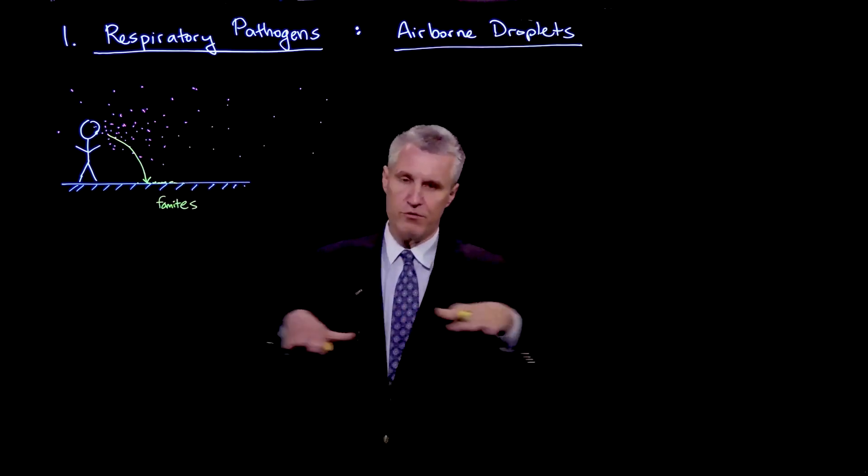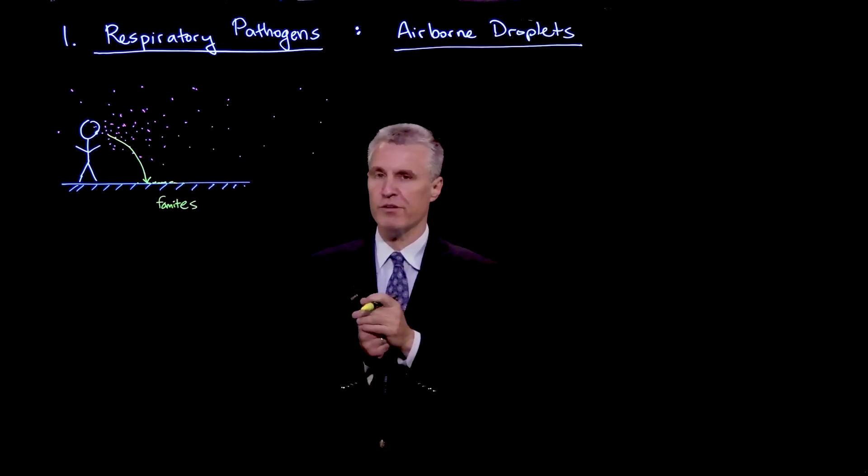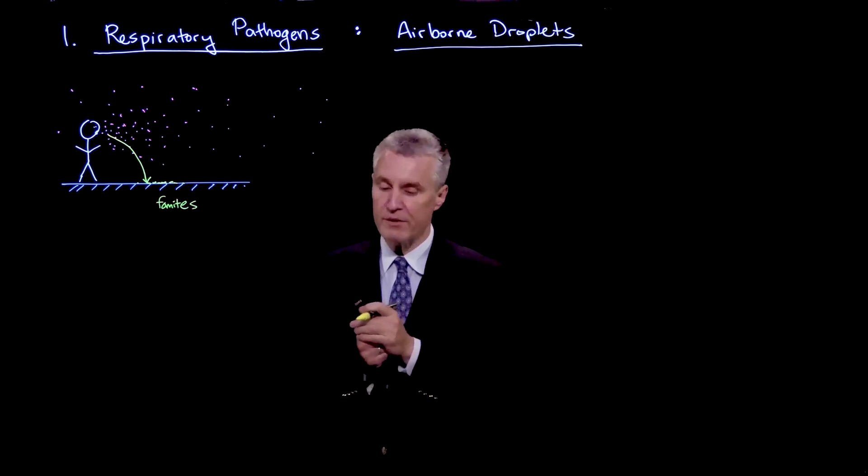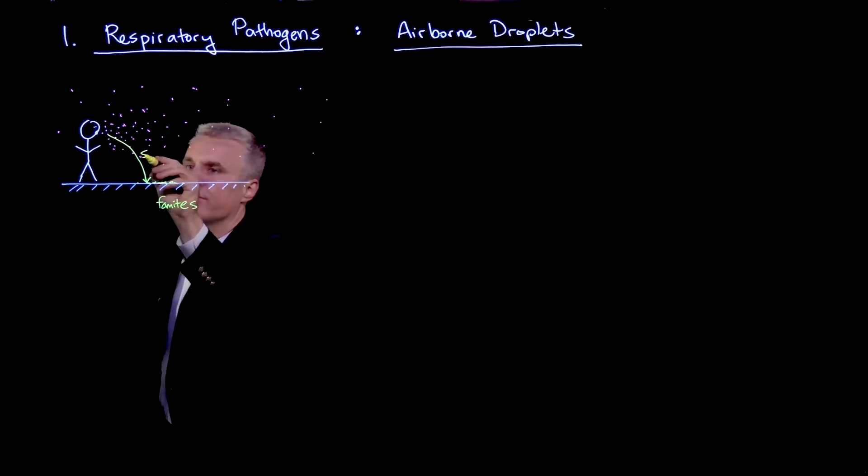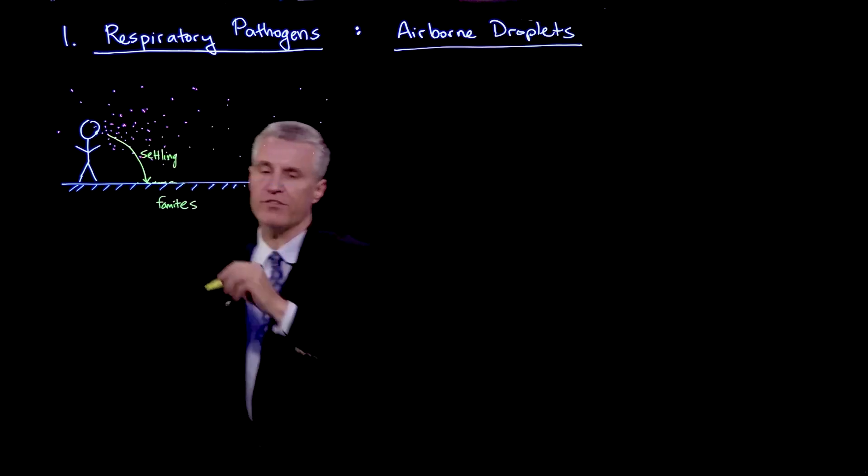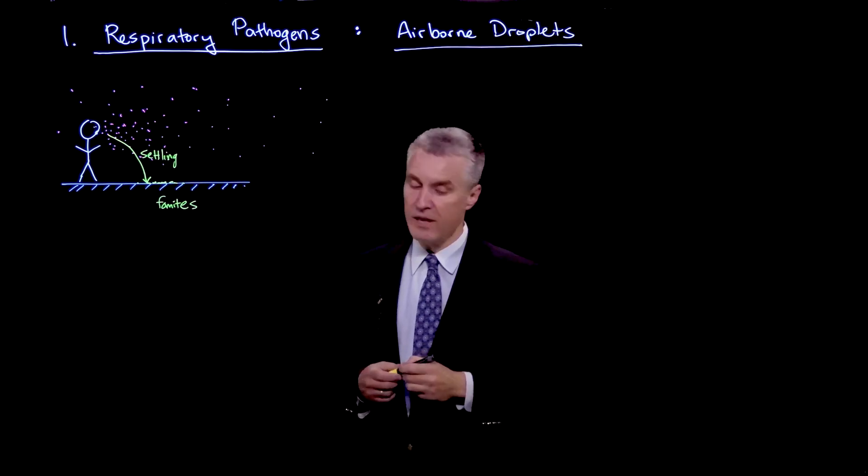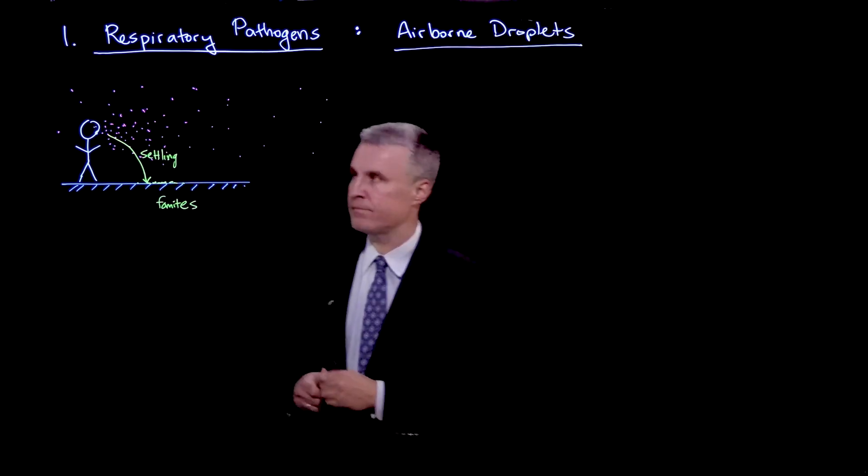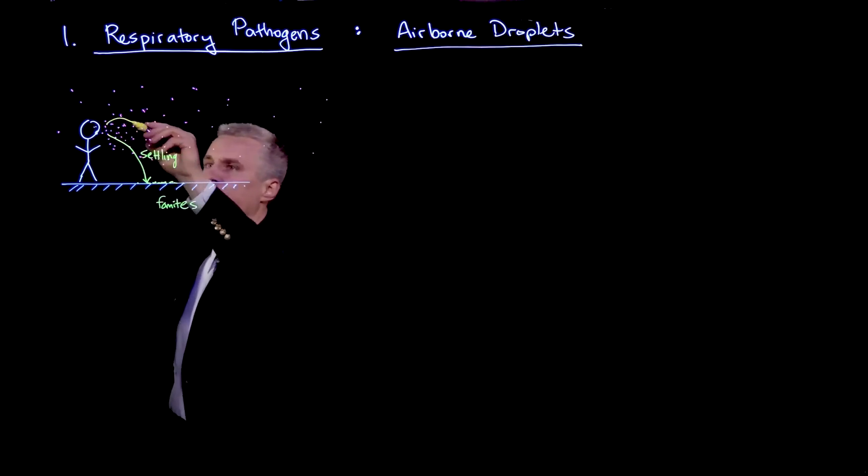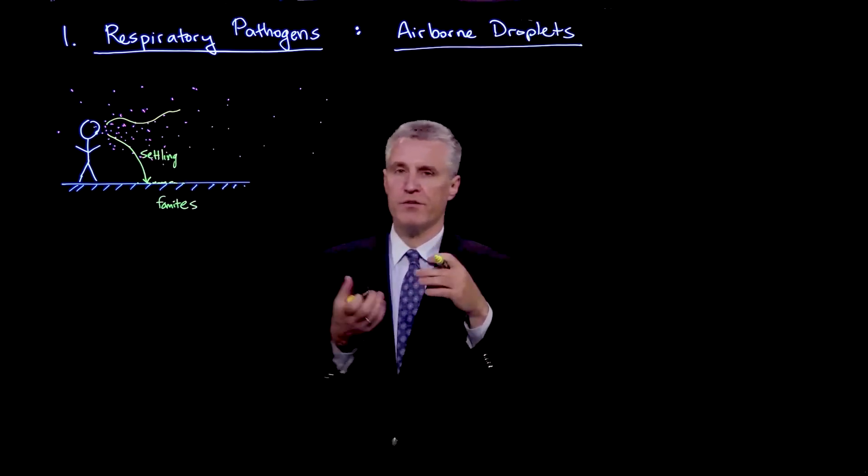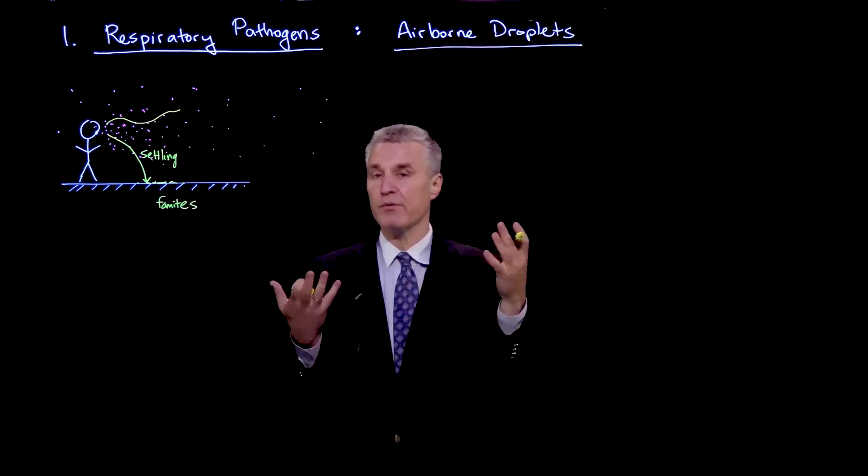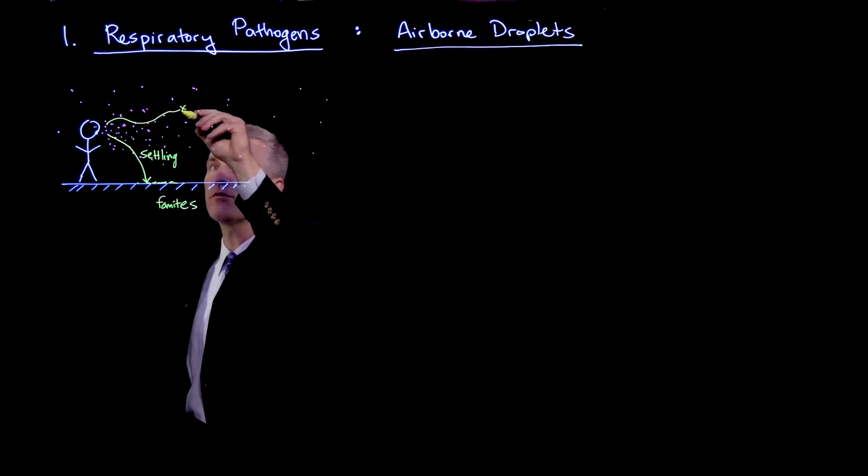That sort of transmission is called fomite transmission. These dried up bits of droplets on the surface are called fomites, and this mode of transfer would involve settling of those droplets to a surface. Another possibility is that the droplets kind of float around, and if they're small enough they might actually evaporate and sort of disappear.